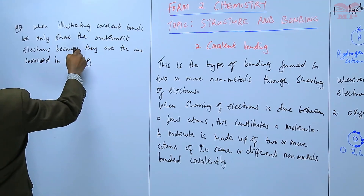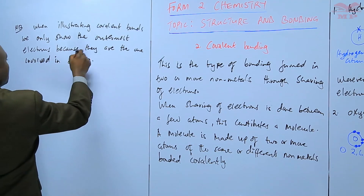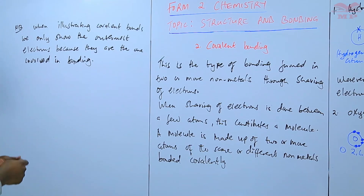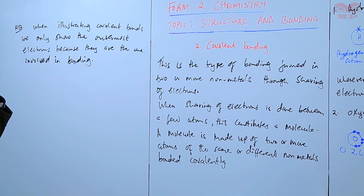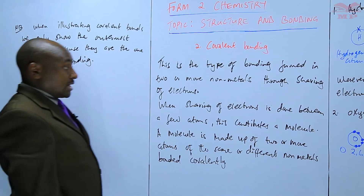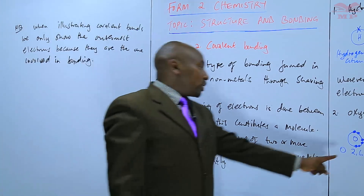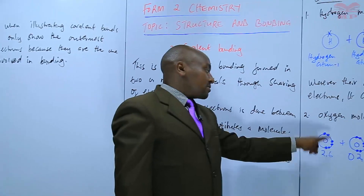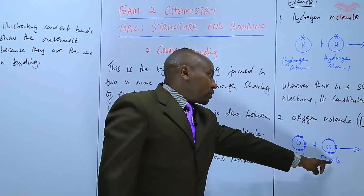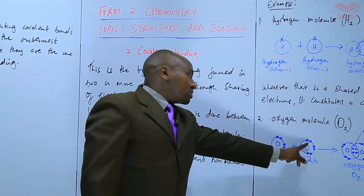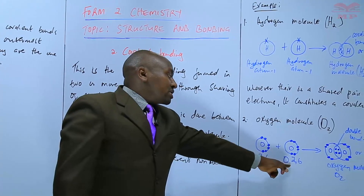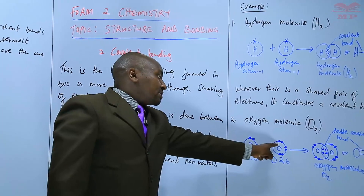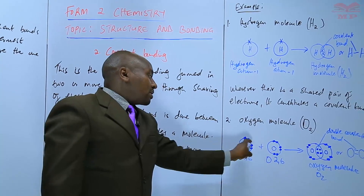We only show the outermost electrons because they are the ones involved in bonding. For oxygen, we show the six outermost electrons, not the two inner electrons. The two inner electrons are not affected — they stay inside and are not involved in bonding.